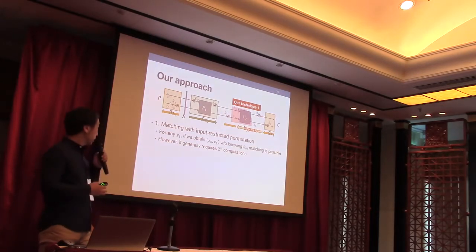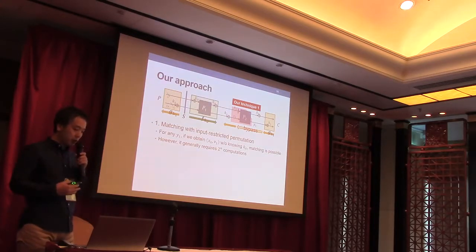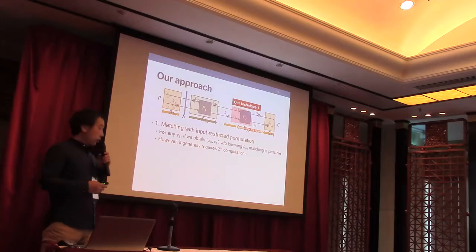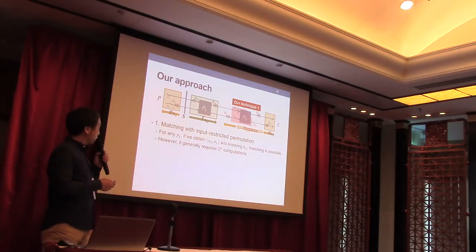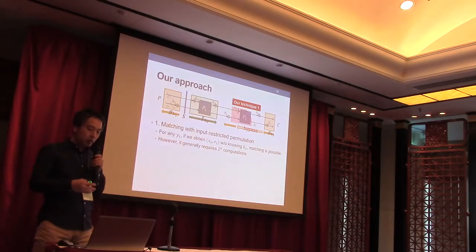The first idea is called matching with input-restricted permutation. For any Y1, if we obtain X0 and V1 without knowing K0, the matching is possible.